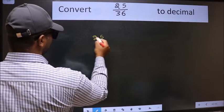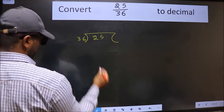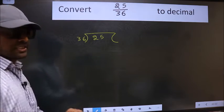25 here and 36 here. This is your step 1.